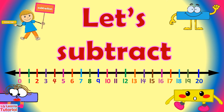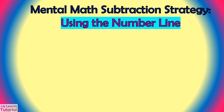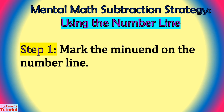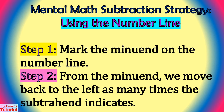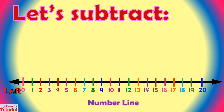Now that we know the parts of a subtraction number sentence, let's subtract. Here are the steps to follow in subtraction using the number line. Step 1: Mark the minuend on the number line. Step 2: From the minuend, we move back to the left as many times as the subtrahend indicates. You can carry out subtraction using a number line.